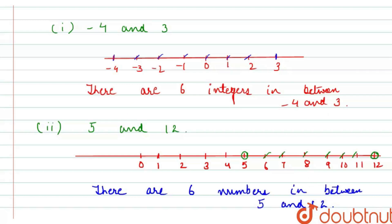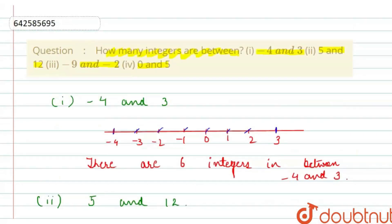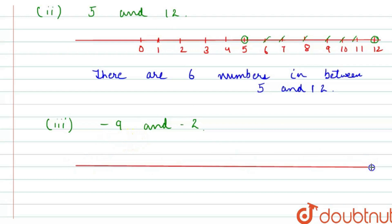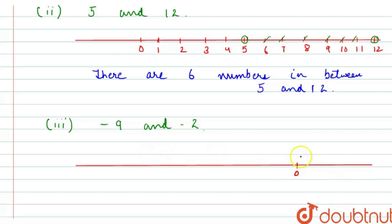Now let's proceed to the third part of the question, which is between minus 9 and minus 2. Here the question is only about negative integers, so I'll be drawing an integer line but considering only the negative part. Here 0 is at the center, on the right side there are positive numbers and on the left side there are negative numbers. This line extends up to infinity both ways.